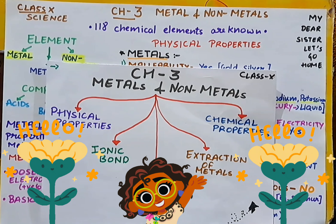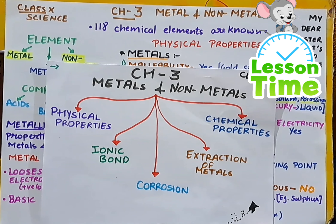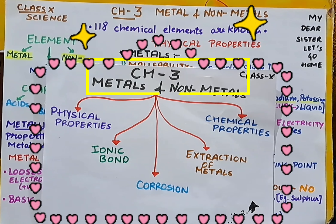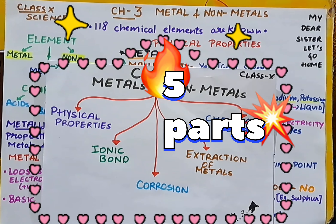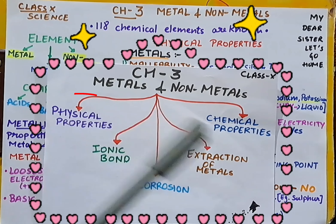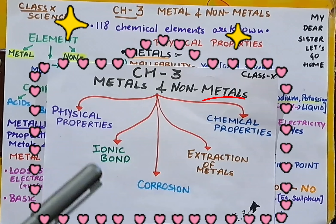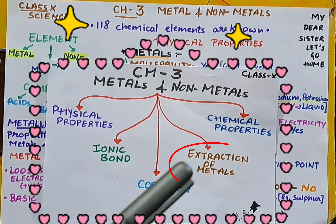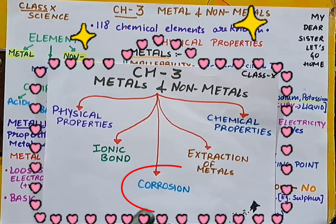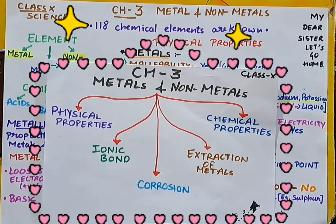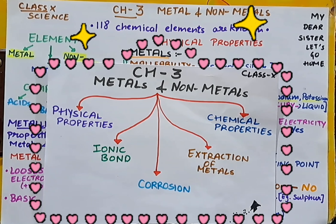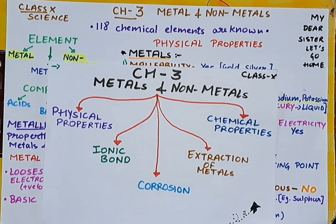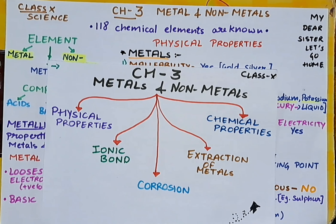Hi everyone, today I have taken up Chapter 3 - Metals and Non-Metals of Science Class 10. The chapter is divided into five parts: physical properties, chemical properties of metals and non-metals, ionic bond formation and its properties, extraction of metals, and finally corrosion. This video is a mind map or summary of the chapter for a quick revision, and includes all the one-mark and two-mark questions from the chapter.